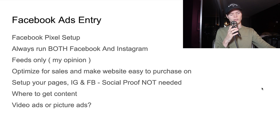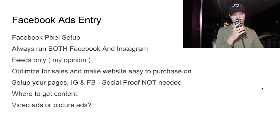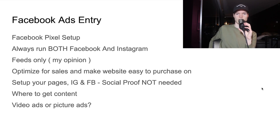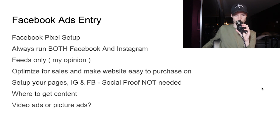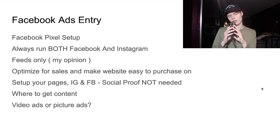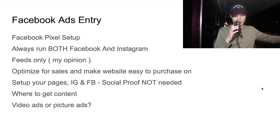Where should you get content? There's a link in the description of where I get my content — you can order videos there. There are also services like Bands of Ads and Viral Ecom Ads. I've had the best results with super high click-through rates from the one linked in the description. Just use whatever you want, but if you want content, you can use that.